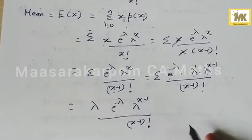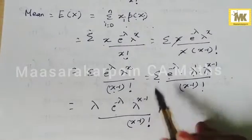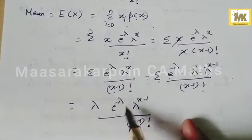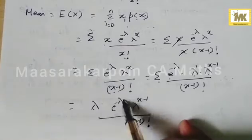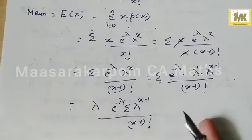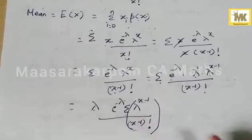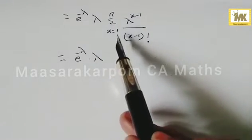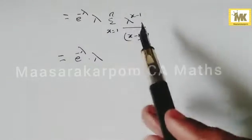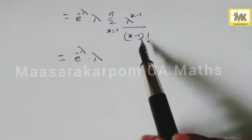The summation is over x. Factoring out lambda · e^{-λ}, the remaining summation is lambda^{x-1} / (x-1)!. Originally the summation was from 0 to n, but since lambda and factorial are defined for positive values and negative factorials are undefined, the summation effectively starts from 1 to n.